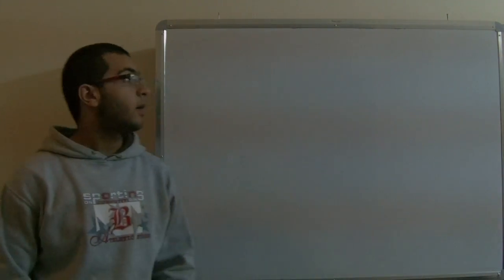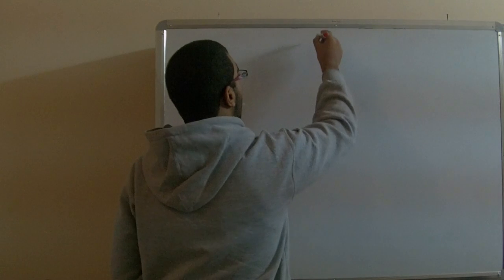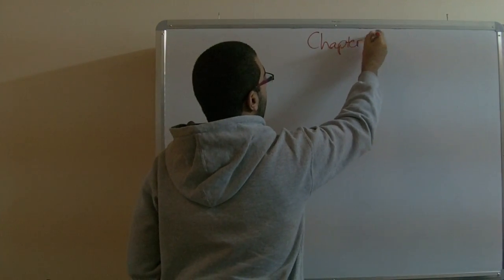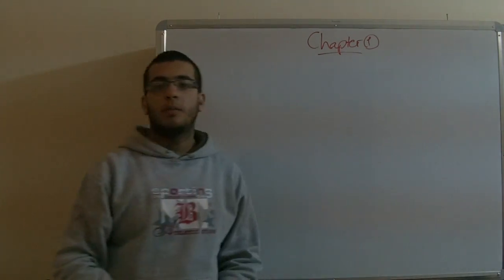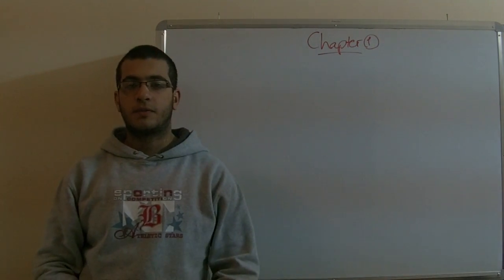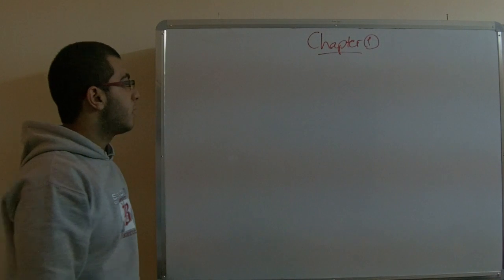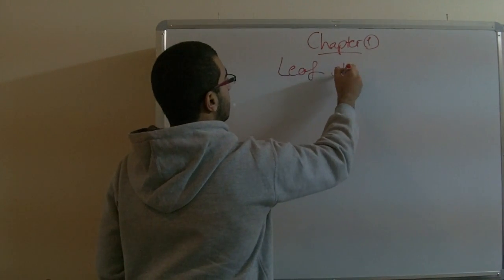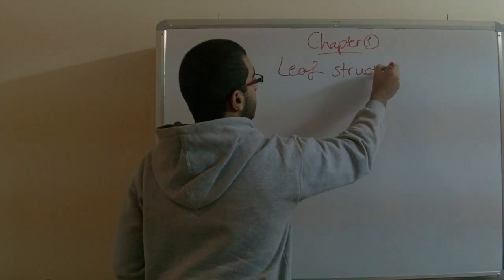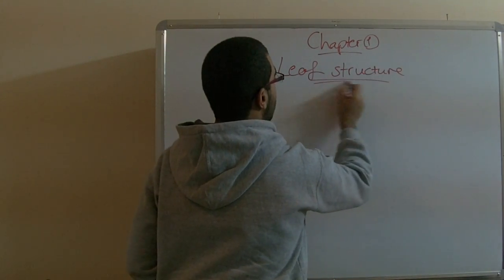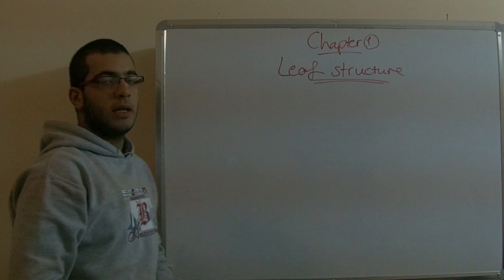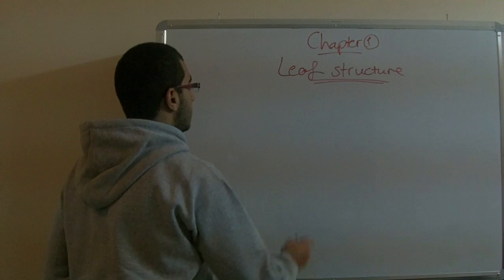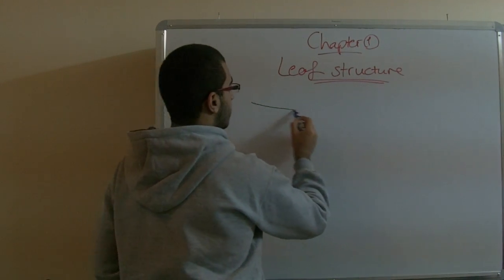Hello and welcome back. We are still in our first chapter of biology. Last time we talked about the adaptation of the leaf to its function, and today we will talk about the leaf structure to see how the leaf is adapted to its function. First, we will do a diagram showing the structural leaf.